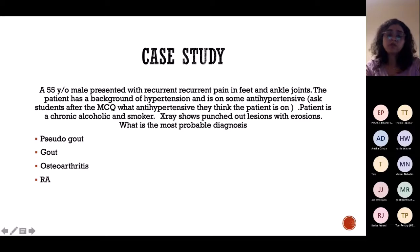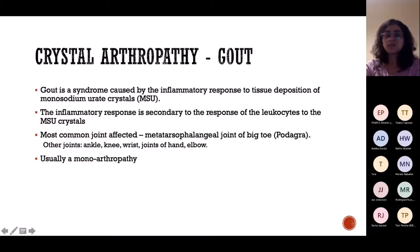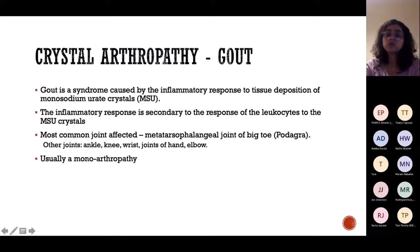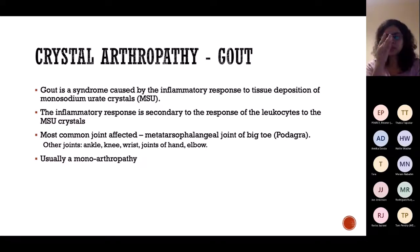The answer is gout. The reason is the history of chronic alcoholism and antihypertensives — antihypertensives lead to uric acid problems, and chronic alcoholism also causes uric acid problems — ultimately leading to gout. Gout is a syndrome involving an inflammatory response to tissue deposition of monosodium urate crystals. When there is hyperuricaemia — high levels of uric acid in the body — it deposits in tissues causing very severe pain.